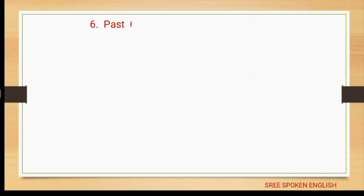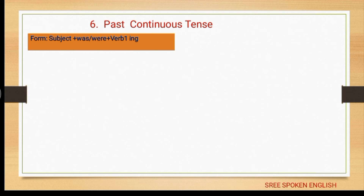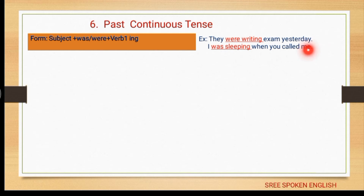The second subcategory of past tense: past continuous tense. The form is: subject + was/were + verb first form in -ing form. Example: 'They were writing the exam yesterday at this time.' Another example: 'I was sleeping when you called me.'